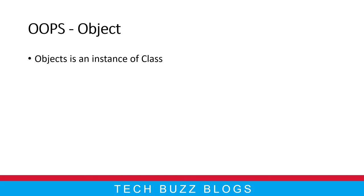Hi guys, welcome back. In this video we are going to discuss about Java objects. Object is one of the main concepts under OOP - object oriented programming. From the naming itself you can see that Java is an object oriented programming language, which means that object plays the main role in Java.